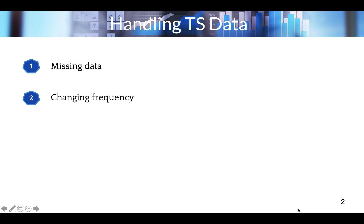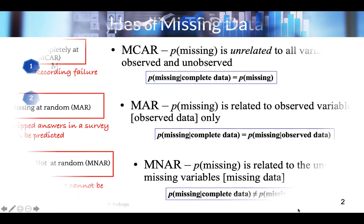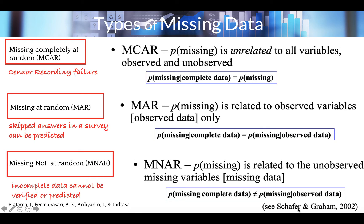We all agree that real data often contain missing values and outlier observations. This week we'll start by learning how to address some common issues with time series data, particularly handling missing data. Later on, you'll learn how to change the frequency of time series — downsampling or upsampling — and smoothing techniques. Since time series data measurements are conducted several times under different conditions, missing data can occur due to problems known as a missingness mechanism.